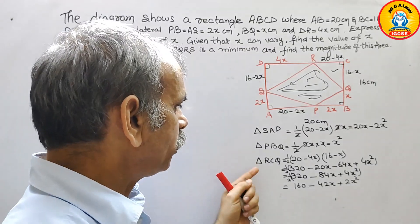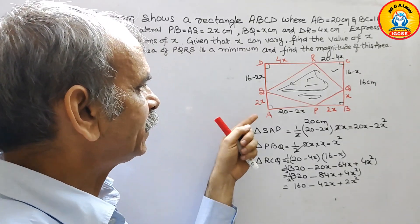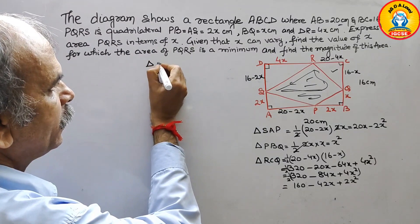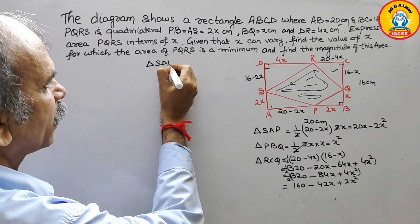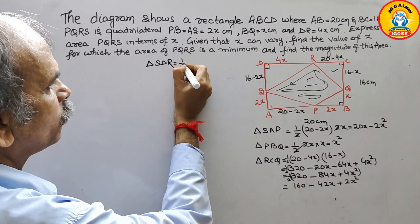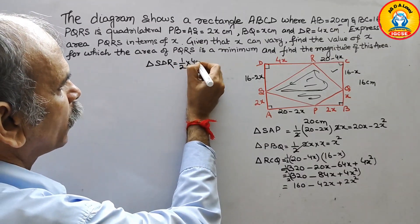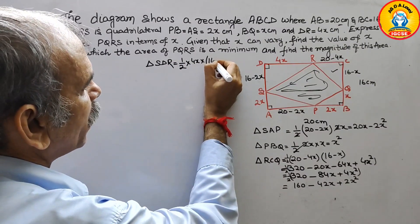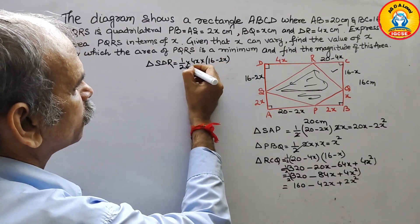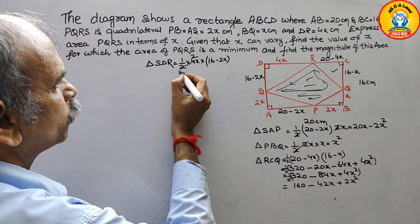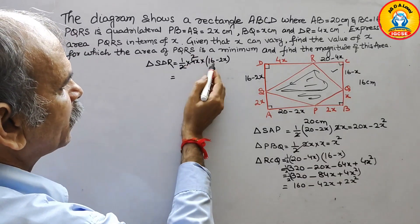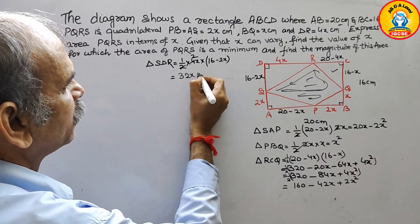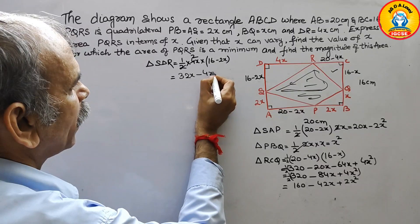Next, triangle SDR. Its area equals half × 4x × (16 minus 2x). The 2 cancels, giving 2x × (16 minus 2x) = 32x minus 4x².